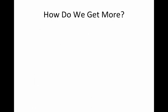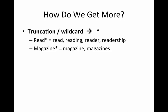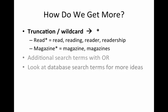So how do we get more results? This is the really important part — how do we revise our keywords to get more results? The first thing I want to show you is using the truncation symbol, or wildcard symbol, which is the asterisk. Read* will get read, reading, reader, readership — it'll also get irrelevant things like ready, but that's okay. Magazine* does the same thing. Later, we'll talk about ORing terms together and looking at database search terms to get more ideas.